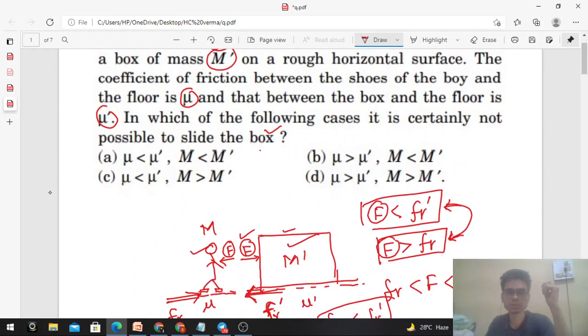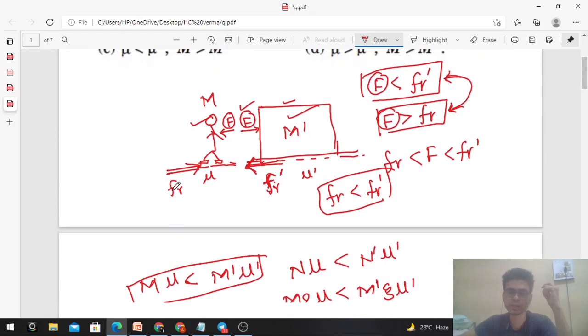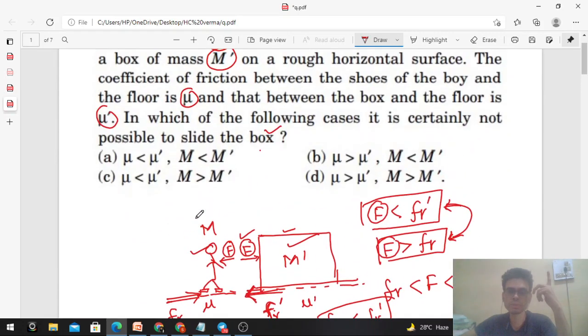So let's check the options. Remember that M'μ' should be greater than Mμ. Check: if μ' is greater than μ and M' is also greater than M, then μ' into M' will definitely be greater than μ into M. So the first case is right.